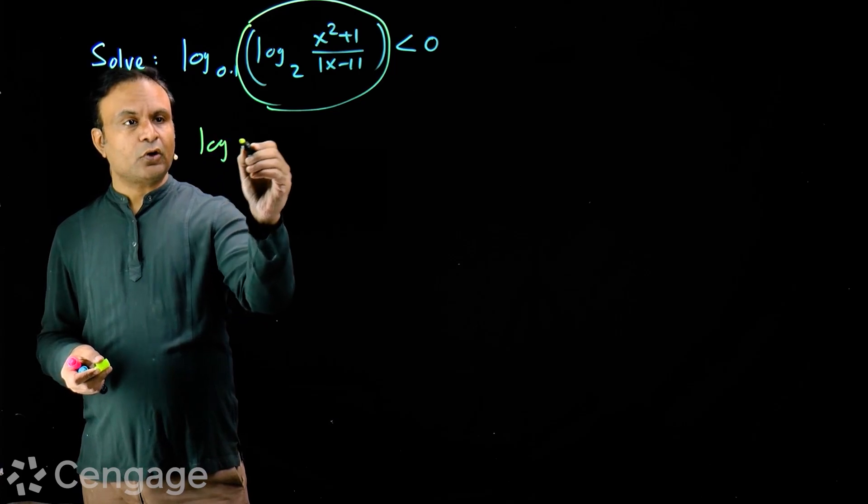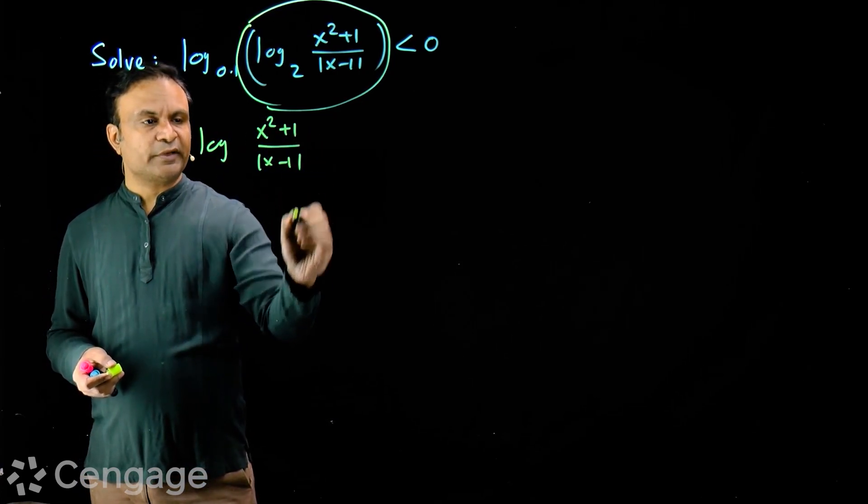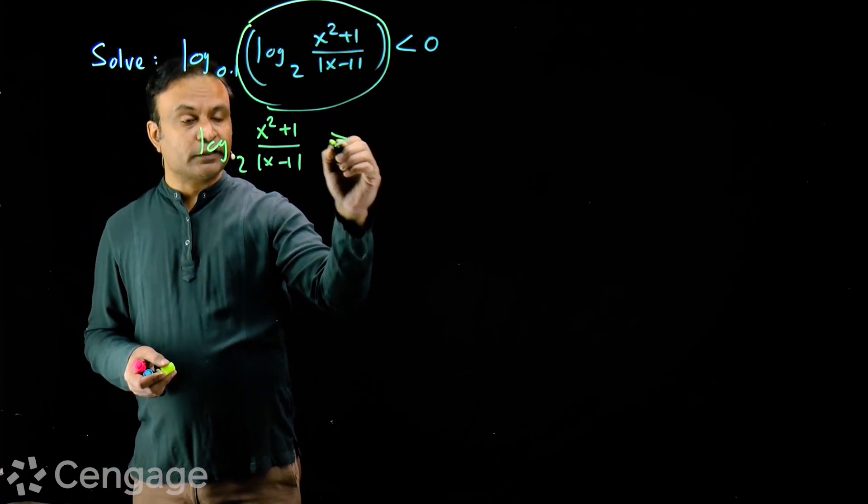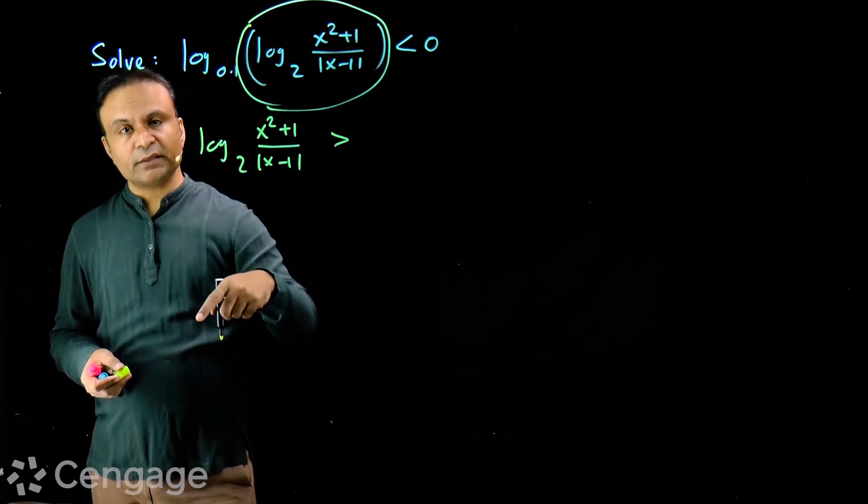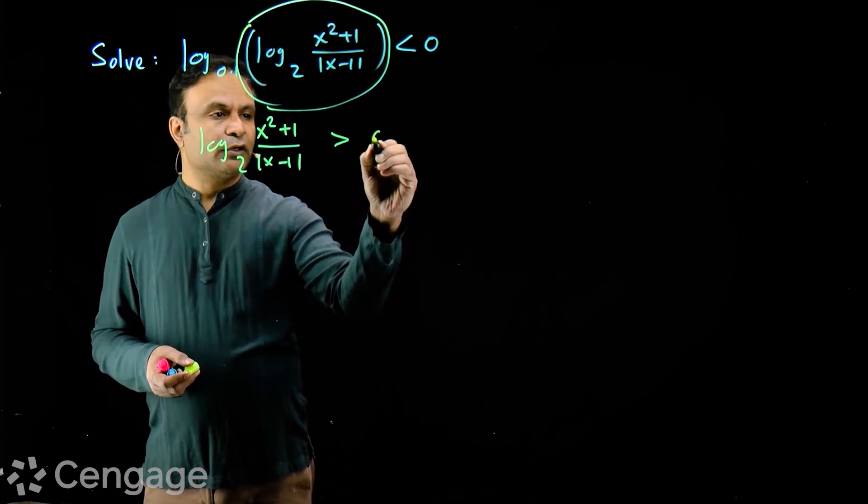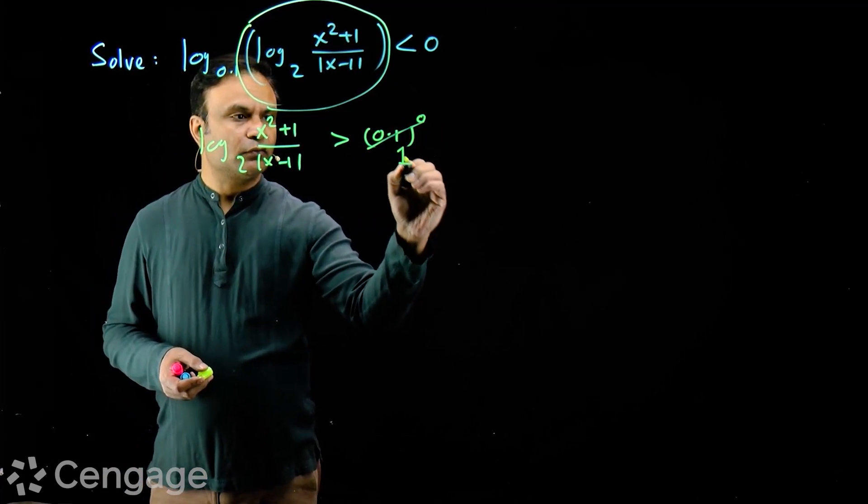So we have log of x square plus 1 upon mod x minus 1 to the base 2. This expression is greater than, we are changing the orientation of inequality because base is less than 1, 0.1 power 0, this is 1.